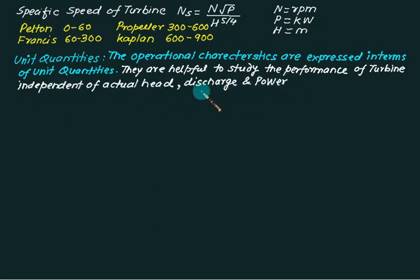So we define here three quantities: one is called as unit speed, one is unit power, and the third one is called as unit discharge.